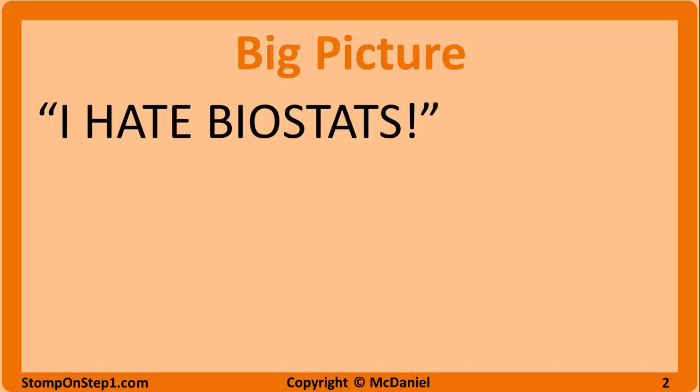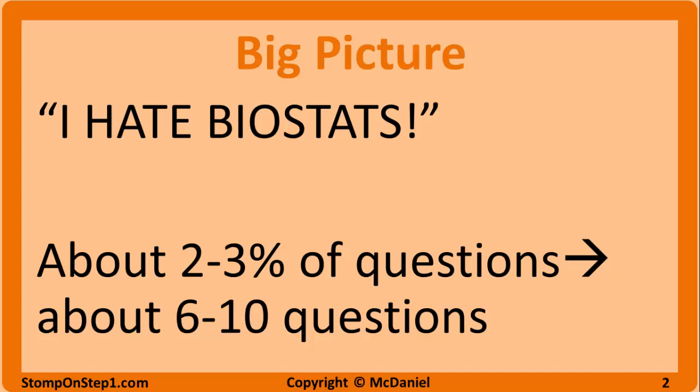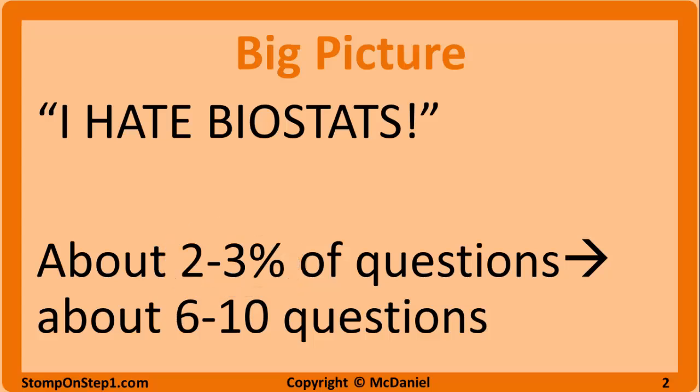Compare that to an organ systems question where you may be required to tie in knowledge from anatomy, physiology, pathology, and pharmacology to work through a complicated differential diagnosis. Biostats questions are a lot easier, and the amount of material you need to know is a lot smaller. Based on my calculations, two to three percent of the questions on the Step 1 exam will be about biostats and epidemiology. With 322 questions on the exam, that comes out to somewhere between six and ten questions.